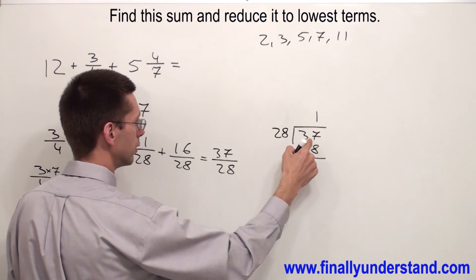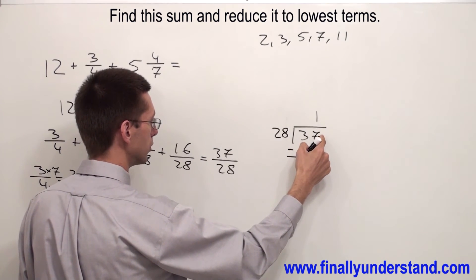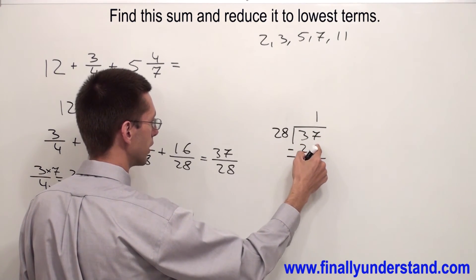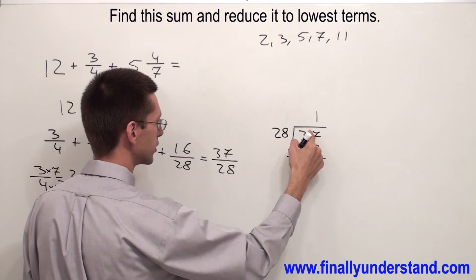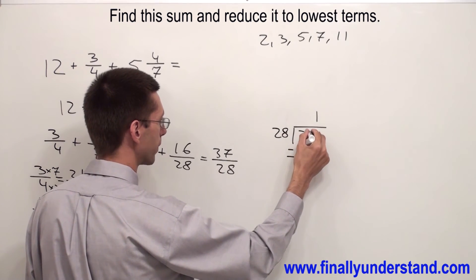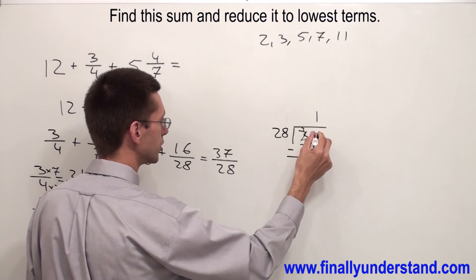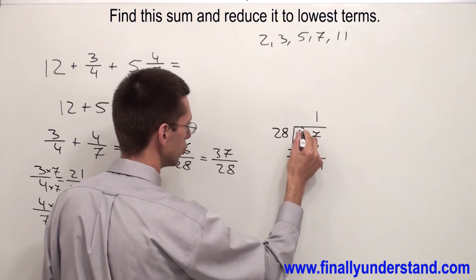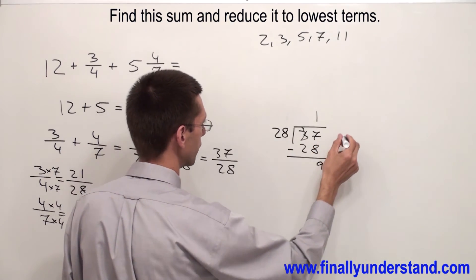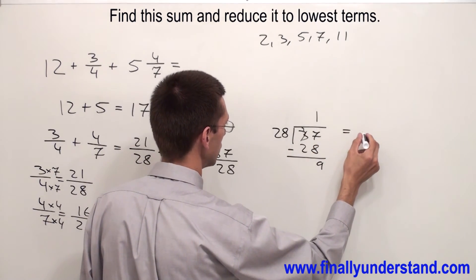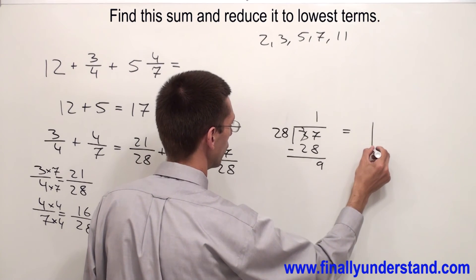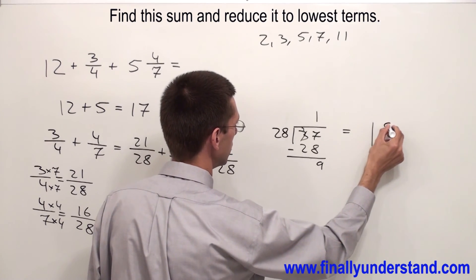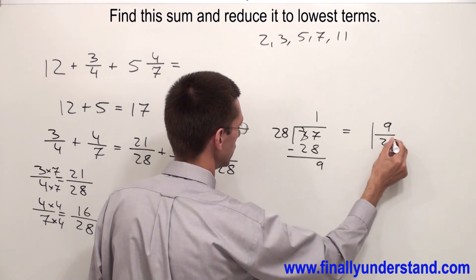1. 1 times 28 is 28 and subtract. I cannot subtract 8 from 7, so I have to borrow 1 from 3. So I have 17. This is going to be 2. 17 minus 8 is 9. 2 minus 2 is 0.